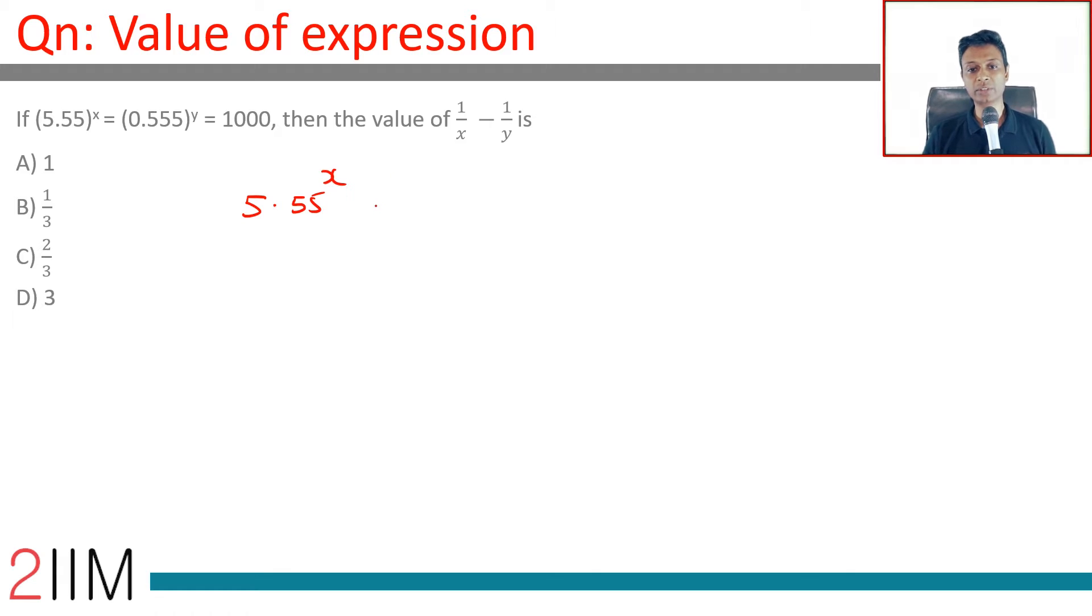5.55 to the power x equals 0.555 to the power of y equals 1000. It's an absolutely wonderful question from exponents and logarithms. 1 by x minus 1 by y, what is this?